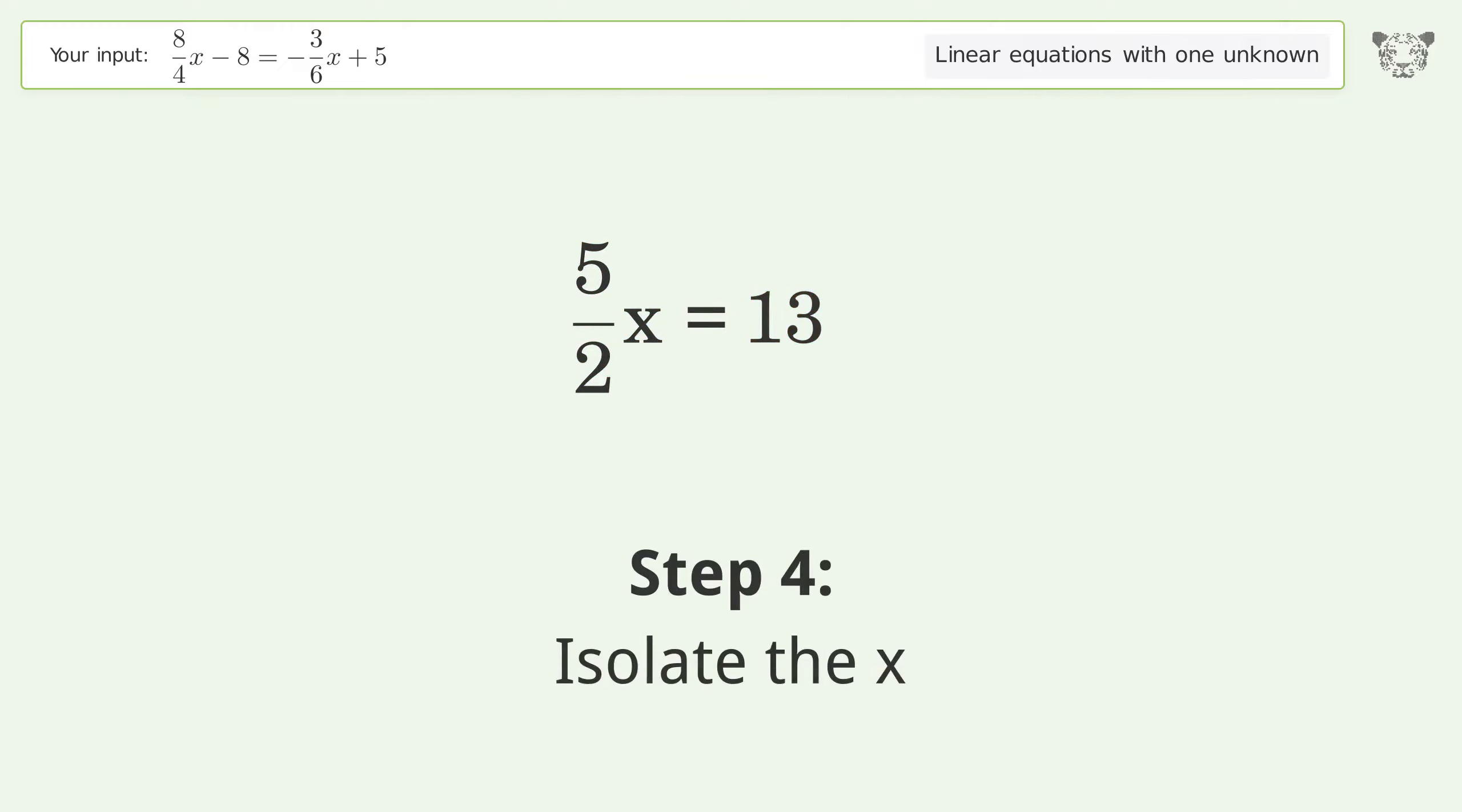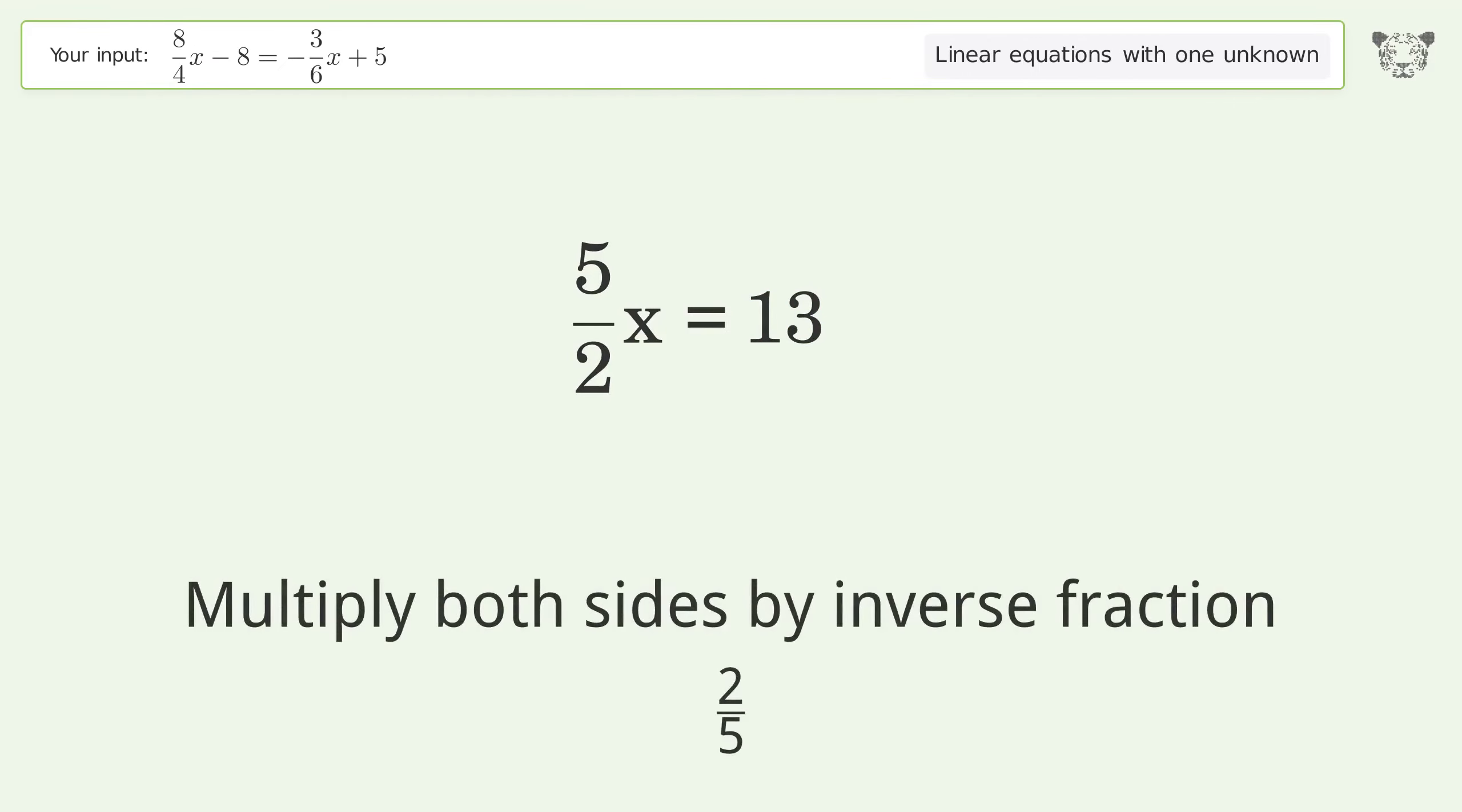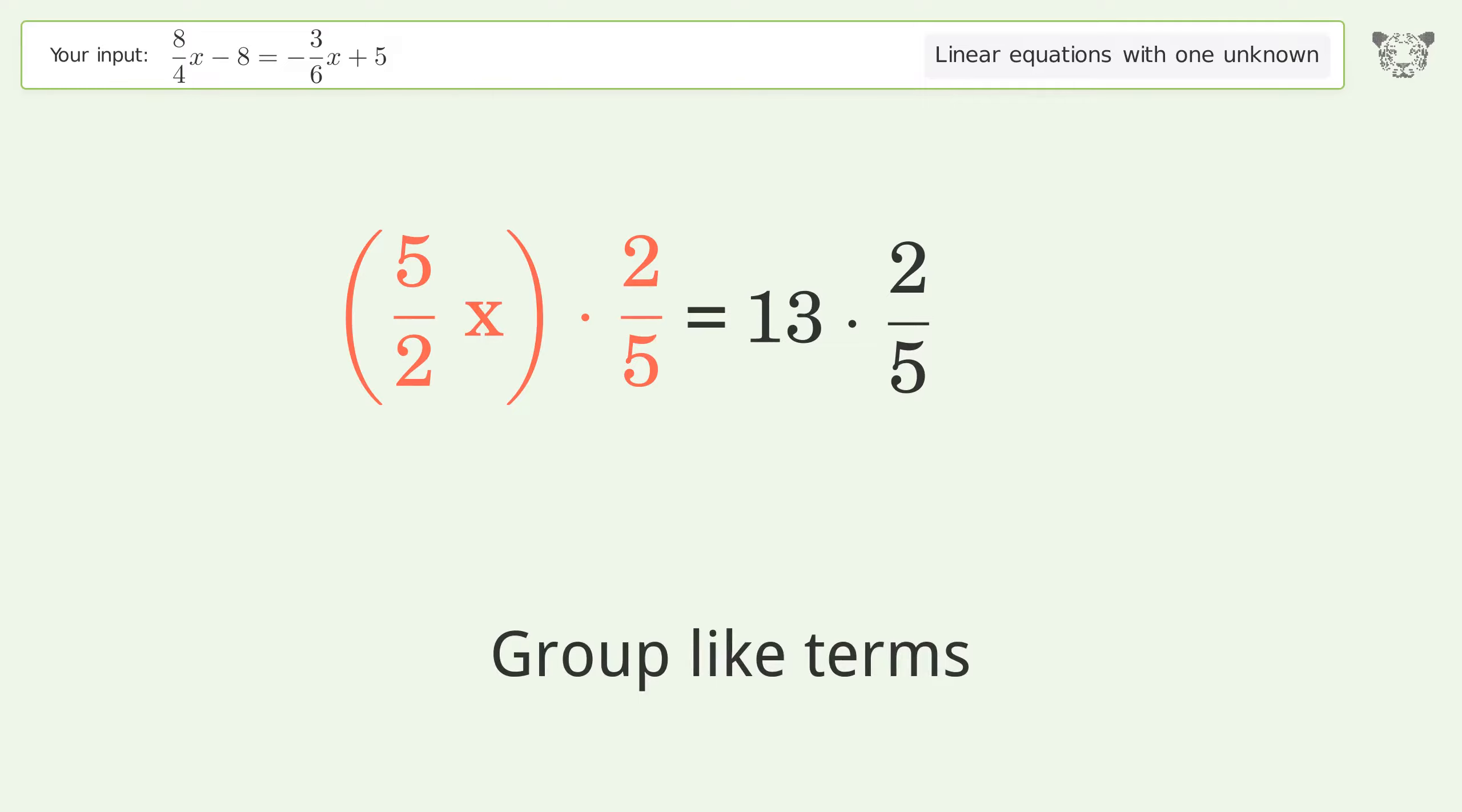Isolate the x. Multiply both sides by inverse fraction 2 over 5. Group like terms. Multiply the coefficients.